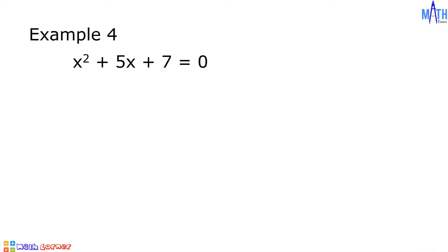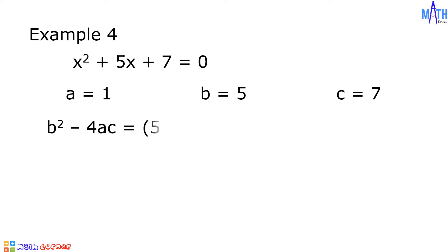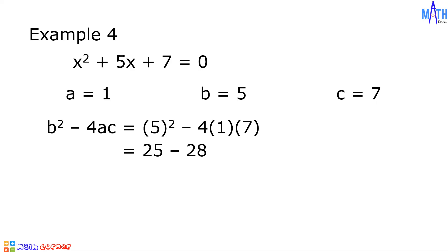Last example: let us determine the nature of the roots of x squared plus 5x plus 7 is equal to 0. In this quadratic equation, a is equal to 1, b is equal to 5, and c is equal to 7. Substituting the given values: b squared becomes 5 squared, minus 4ac becomes minus 4 times 1 times 7. 5 squared is 25; negative 4 times 1 is negative 4; negative 4 times 7 is negative 28. So 25 minus 28 equals negative 3. Since the discriminant is less than 0, the roots are imaginary.